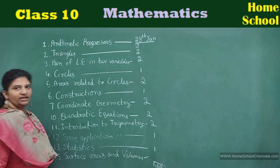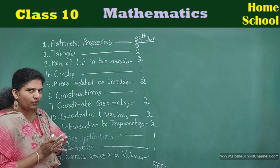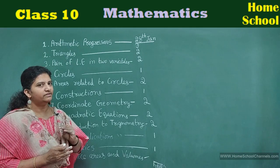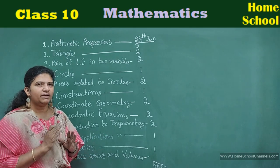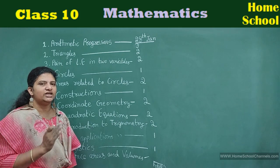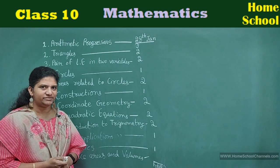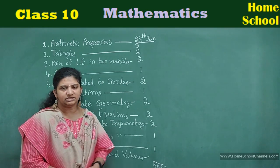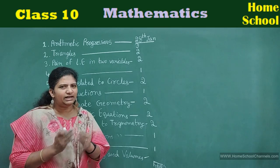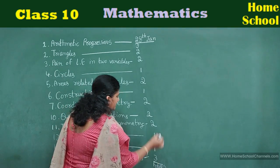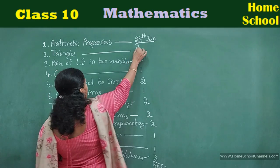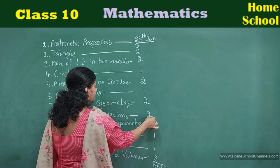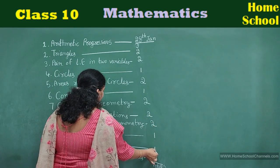Statistics — one day is more than enough. If you take one problem and find mean, median, less than ogive, and more than ogive, you can complete statistics within half an hour, but take one complete day to solve at least half the problems in each exercise. Last chapter — Surface Areas and Volumes — a little lengthy, so three days. Adding all up: 3+2+2+1+2+1+2+2+2+1+1+3 = 22 days total.